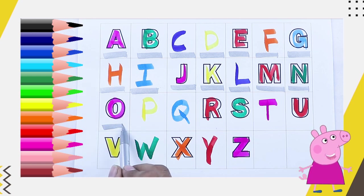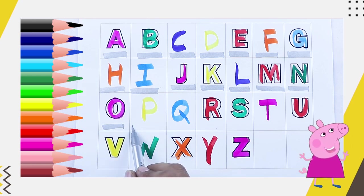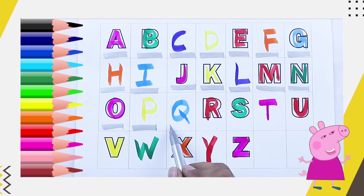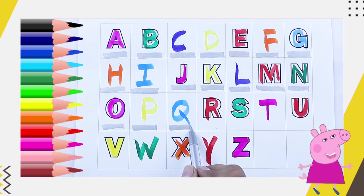Pink color O. O for octopus. Yellow color P. P for parrot. Blue color Q. Q for queen.